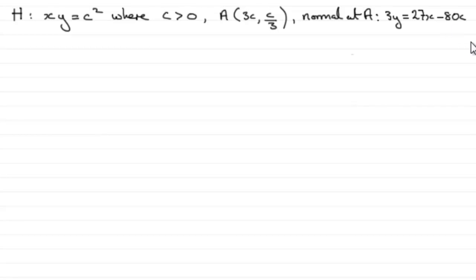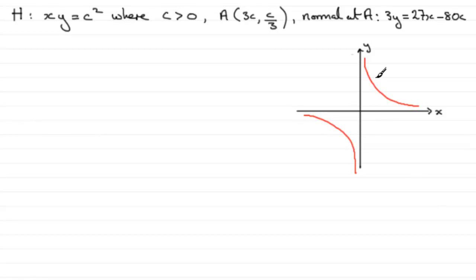To do something like this, what I would want to do is draw a quick sketch — I always find it's useful. So we've got the sketch of our hyperbola H. We know that C is a positive value, so point A is going to be somewhere on this branch here. This is our point A with coordinates 3C and C over 3.